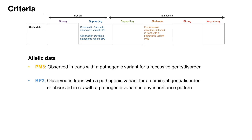Next, Allelic Data: PM3 can be assigned when observed in trans with a pathogenic variant for a recessive gene/disorder. BP2 can be assigned when observed in trans with a pathogenic variant for a dominant gene/disorder, or observed in cis with a pathogenic variant in any inheritance pattern.